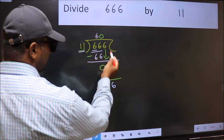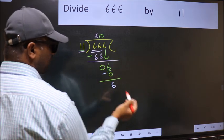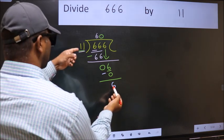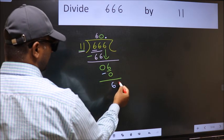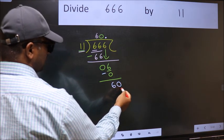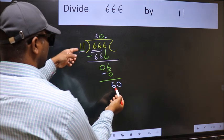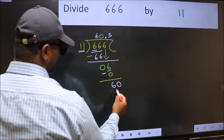Over here, we did not bring any number down, and 6 is smaller than 11. So now you can put dot and take 0, so 60. A number close to 60 in the 11 table is 11 times 5, which is 55.